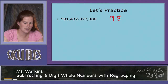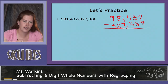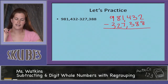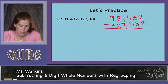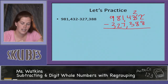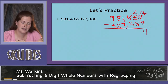Let's practice. We have 981,432 minus 327,388. Our numbers are lined up vertically. Starting with our ones place, we have 2 minus 8 — that tells us we need to regroup. So we come to our tens place: our 3 becomes a 2 and our 2 becomes a 12. 12 minus 8 equals 4. We need to regroup again: this 4 becomes a 3 and this 2 becomes a 12.